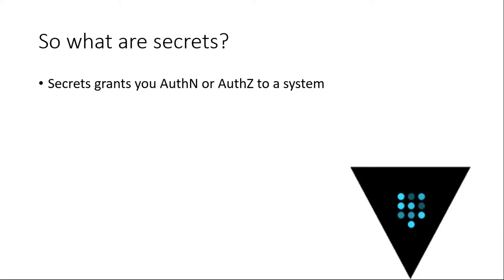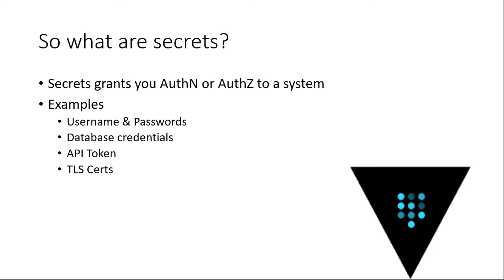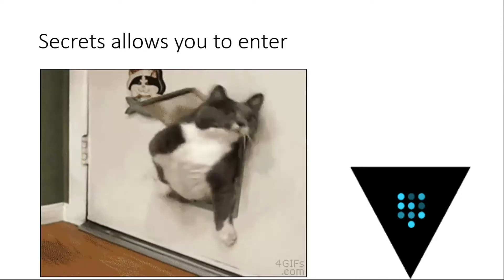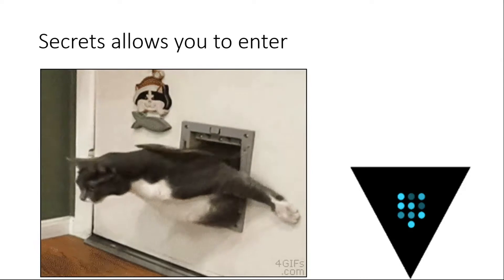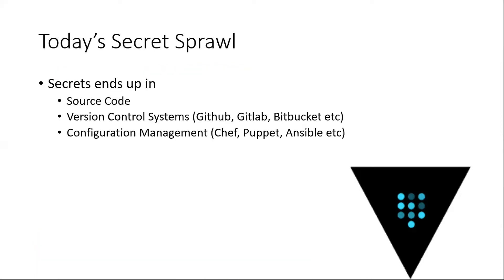What are examples of secrets? Your usernames, passwords, database credentials, connection strings, API tokens, TLS certificates — those are all considered secrets of your system. What do secrets allow you to do? They basically allow you to enter a system, like opening a door.